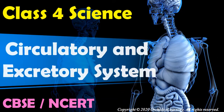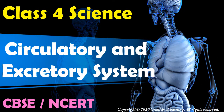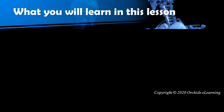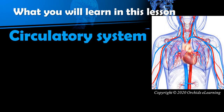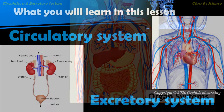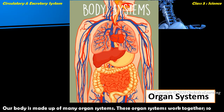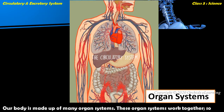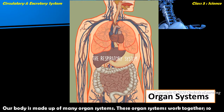Circulatory and excretory system — Class 4 Science. By the end of this session you will understand the circulatory system and the excretory system. Children, we all know that our body is made up of many organ systems, and these organ systems work together.